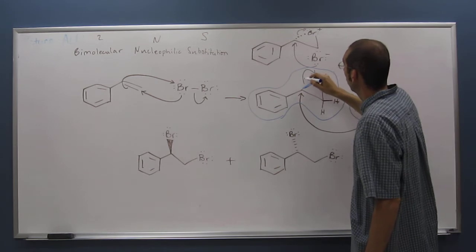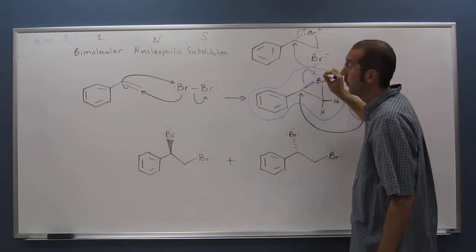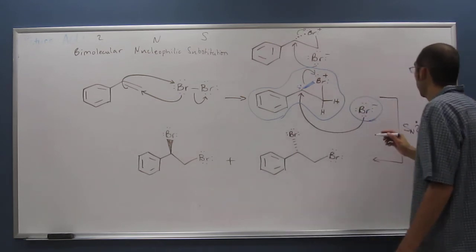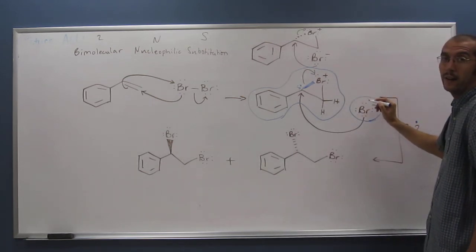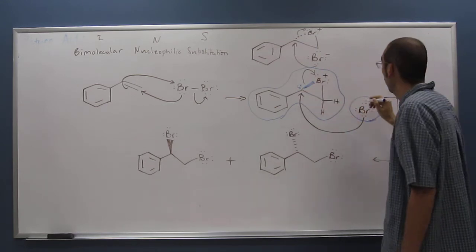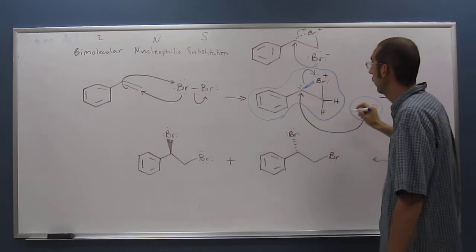The bromine is pulling a lot of electron density away, making this carbon very partial positive. So since this thing's negative and this thing's positive, it likes that thing. That's your nucleophile, or your nucleophilic.